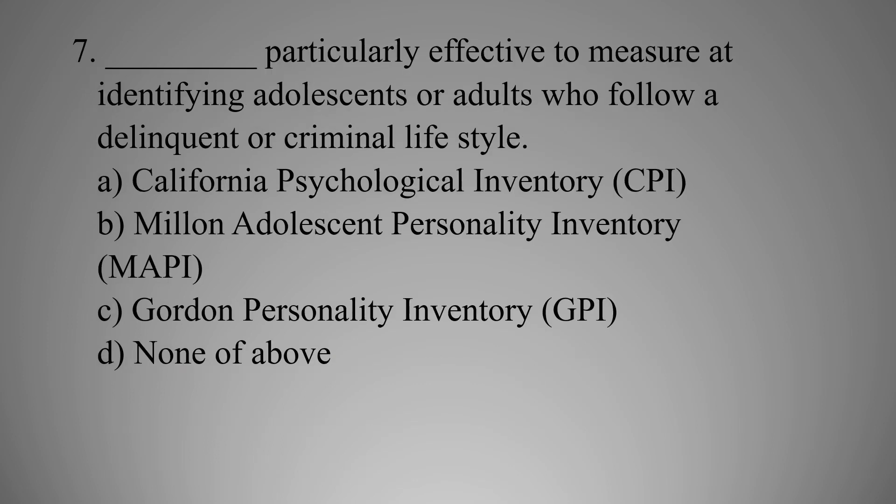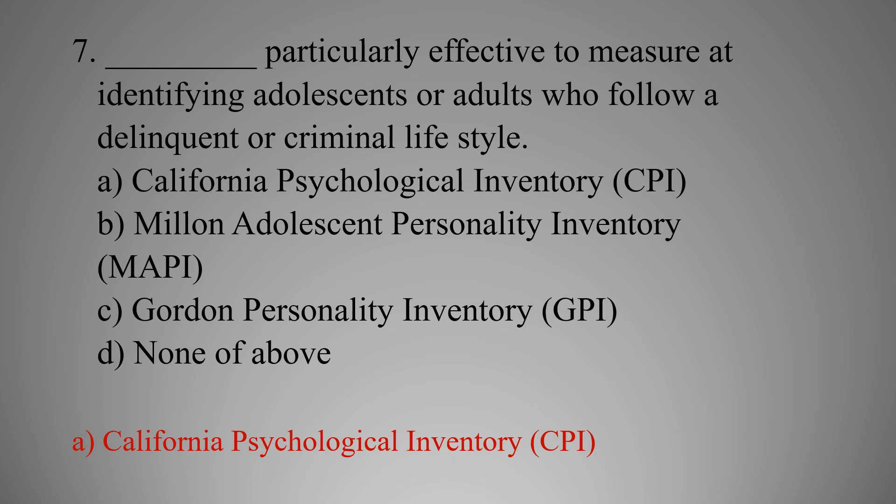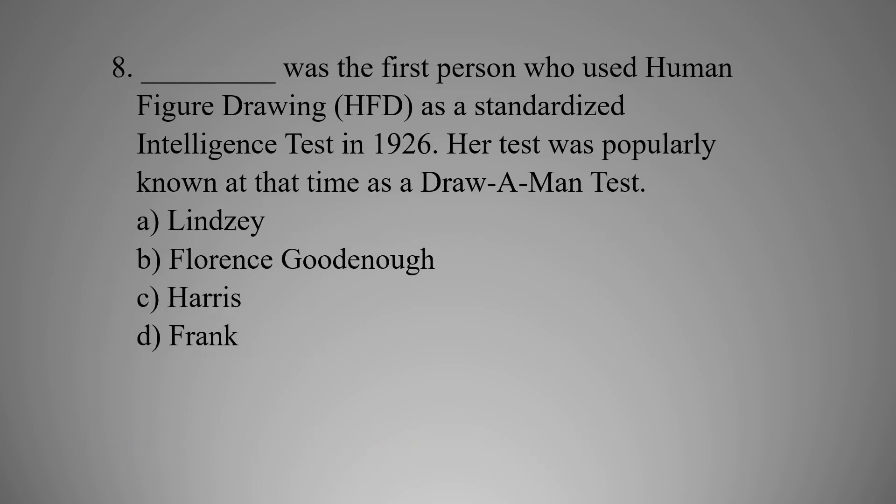MCQ number seven: This test is particularly effective at identifying adolescents or adults who follow a delinquent or criminal lifestyle. Option A: California Psychological Inventory (CPI), Option B: Millon Adolescent Personality Inventory (MAPI), Option C: Gordon Personality Inventory (GPI), Option D: None of the above. The right option is A — California Psychological Inventory (CPI).